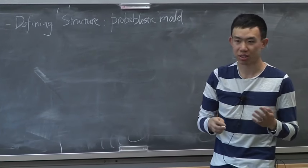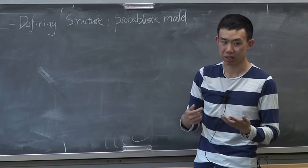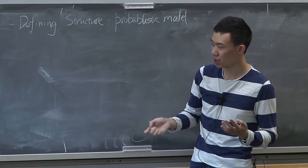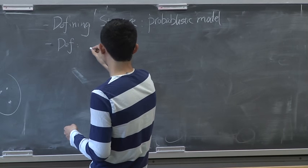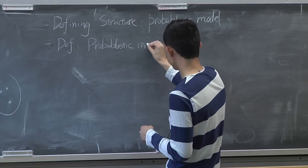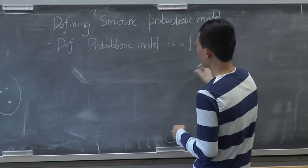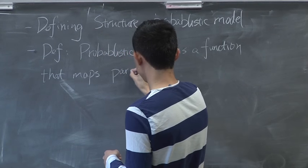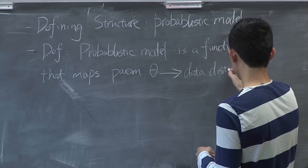What is a probabilistic model? A probabilistic model takes in some parameters for the model, and then the model will tell you how to generate a set of points. The parameters will be the kind of structure we are looking for. Informally, it is a function that maps parameter theta to a data distribution D of theta.